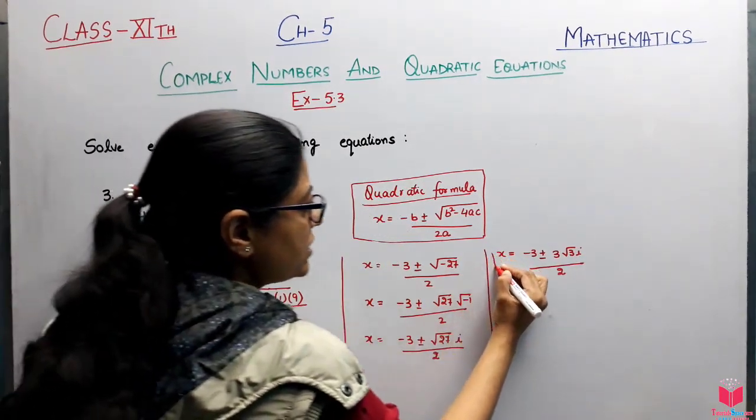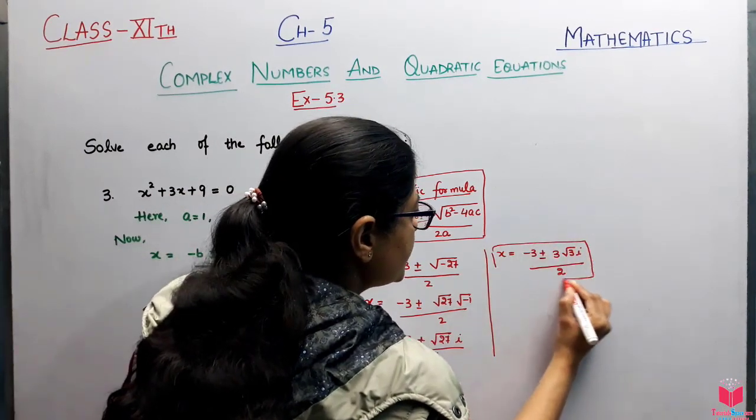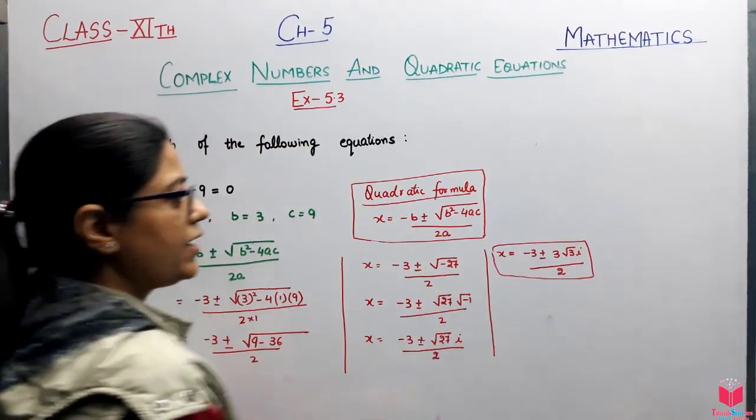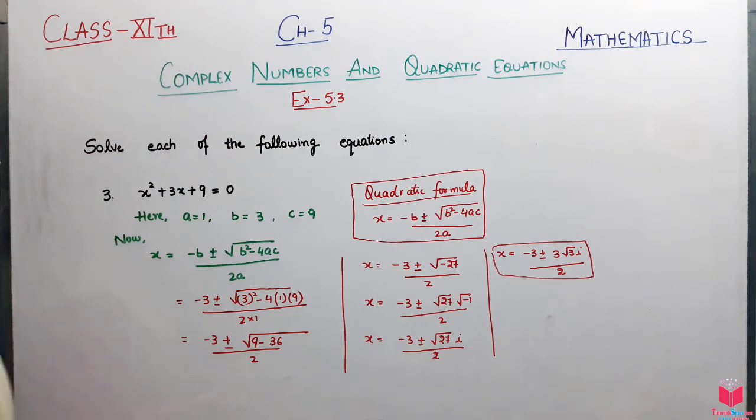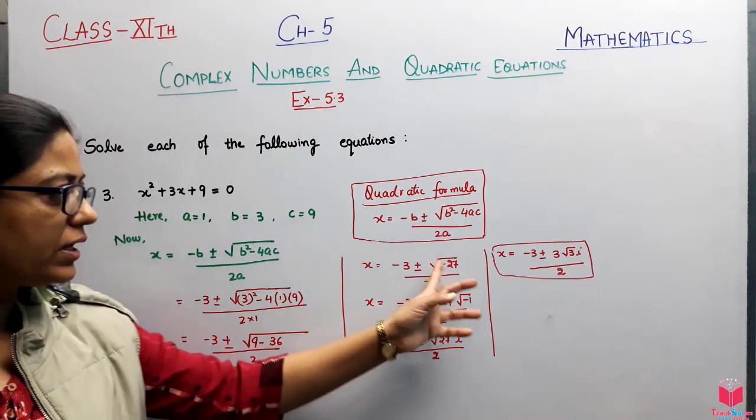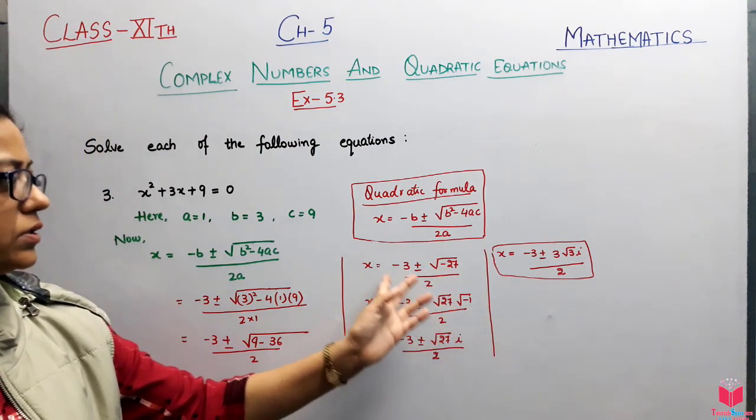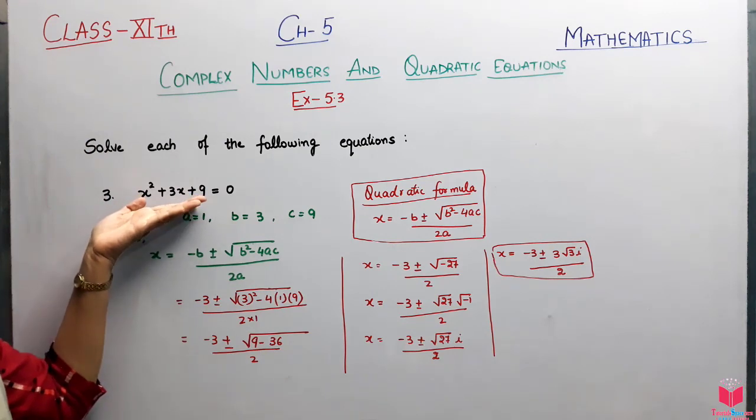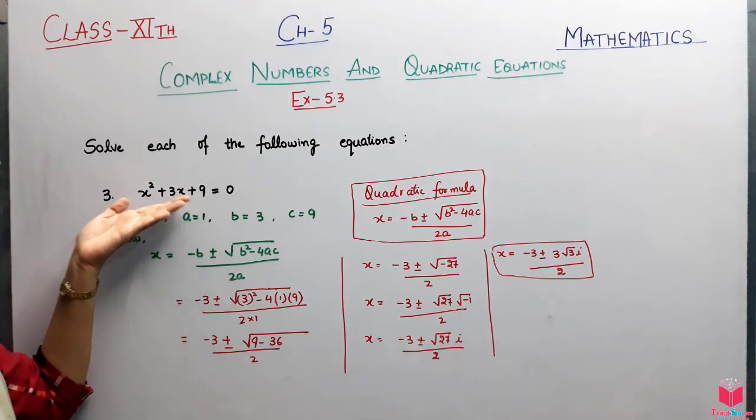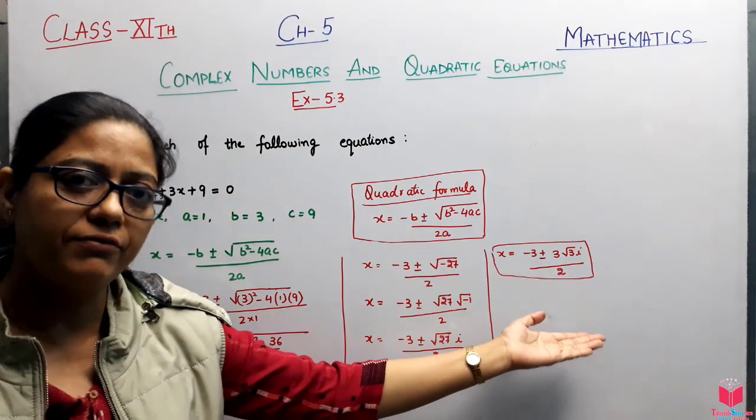So that is your answer. You can see now, you can write the answer here where your two values of x will come. So by using the quadratic formula plus complex number rule, you can find out the equation and get your x values.